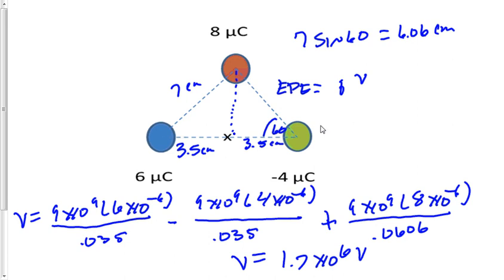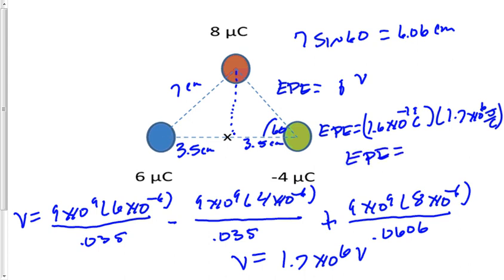So electric potential energy is equal to 1.6 times 10 to the minus 19 coulombs. And we'll multiply that by 1.7 times 10 to the sixth. Now volts is joules per coulomb. And electric potential energy will be a small value because it's only one proton. That's equal to 2.7 times 10 to the minus 13 joules.